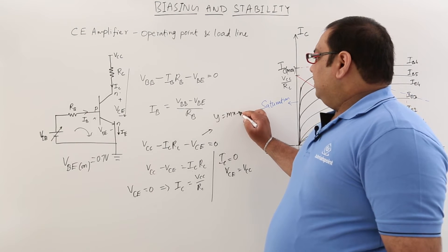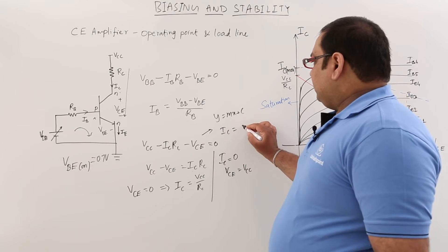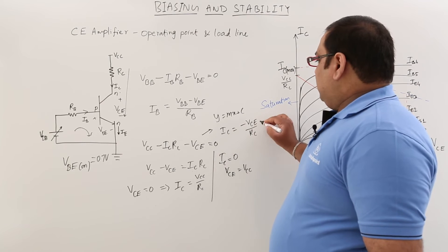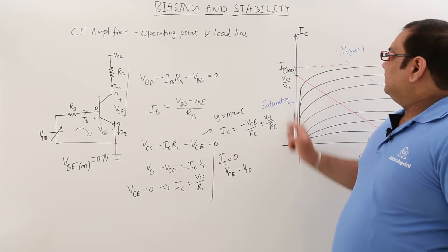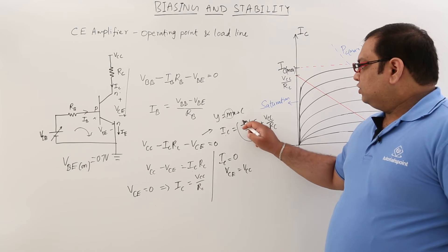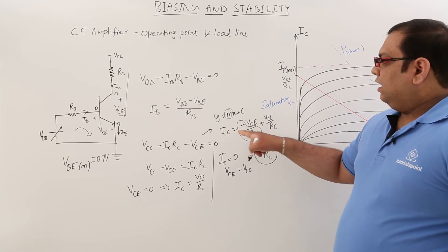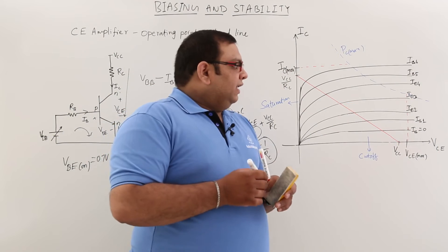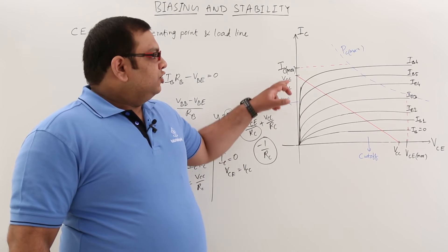Joining these two points gives the DC load line of the transistor. The slope of this load line equals minus 1/RC. Writing the output equation in the form y = mx + c: IC equals minus VCE/RC plus VCC/RC. Comparing, the Y-axis is IC, the X-axis is VCE, and the slope M is minus 1/RC.